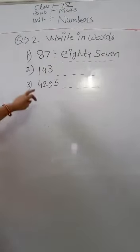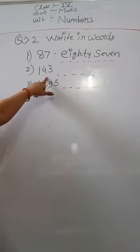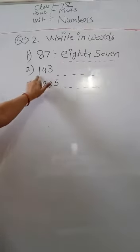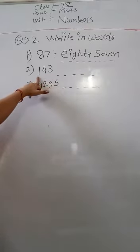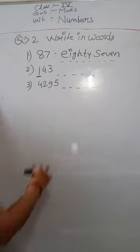Here is the second number: 143. We already know about the place value of 3, 4, and 1. The place value of 1 here is 100. So let's start writing 143 in words.